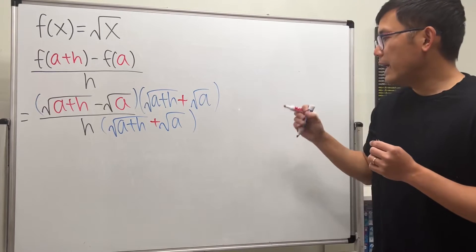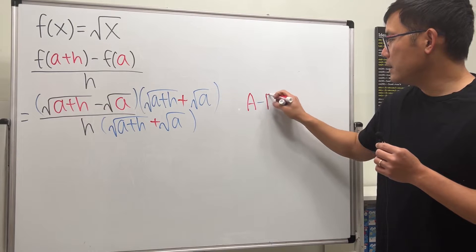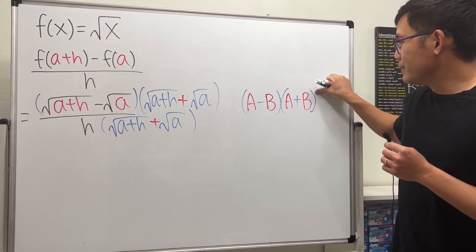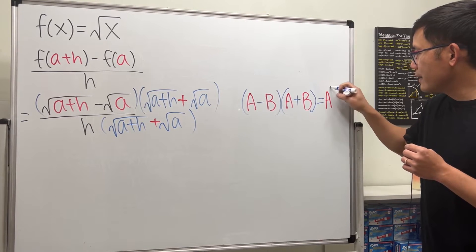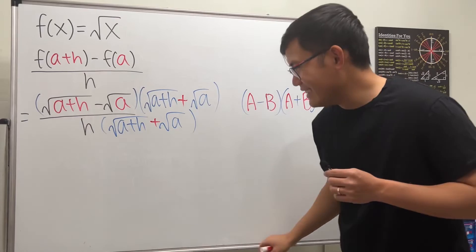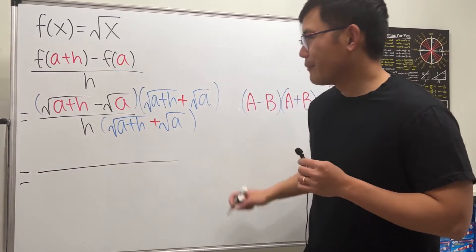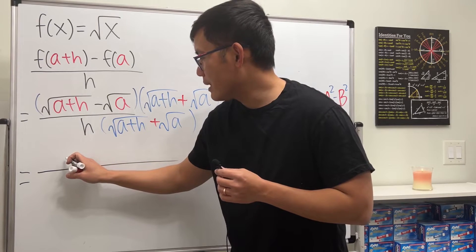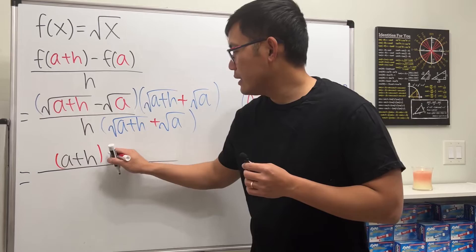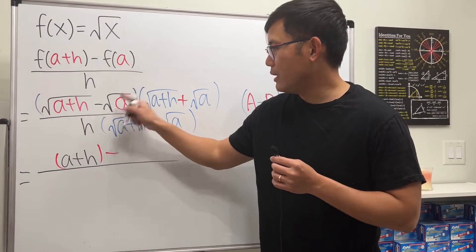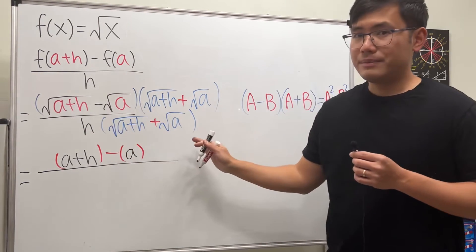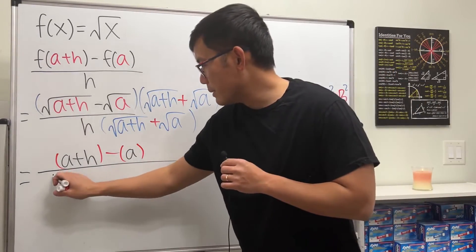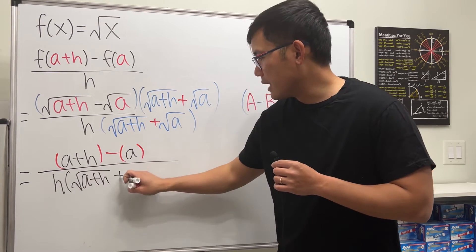For the top, we use the difference of two squares: (a−b)(a+b) = a²−b². It fits perfectly here. We square the first term — the square root of (a+h) squared is just (a+h) — and then minus the second term squared, which is just a. For the bottom, do not distribute the h; leave it as h times (√(a+h) + √a).